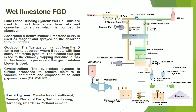Wet limestone FGD, which is widely used in power plants nowadays. Limestone grinding system: wet ball mills are used to grind the limestone from the silo and convert it to slurry, which is pumped to the absorber. Absorption and neutralization: limestone slurry is used as a reagent and sprayed into the absorber through nozzles. Oxidation: the flue gas coming from the hydrophane is fed into the absorber where it reacts with lime slurry and forms gypsum. The cleaner flue gas is fed to the chimney; a gas-to-gas heater traps moisture and an oxidation blower pressurizes the flue gas. Crystallization: the by-product gypsum is further processed to remove moisture in vacuum belt filters and disposed of as solid gypsum cakes.